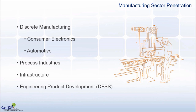As far as manufacturing is concerned, the evolution of Six Sigma itself started with the manufacturing sector. Sectors within manufacturing include discrete manufacturing, process industries, infrastructure, engineering, and product development. The penetration of Six Sigma is quite deep in these areas.